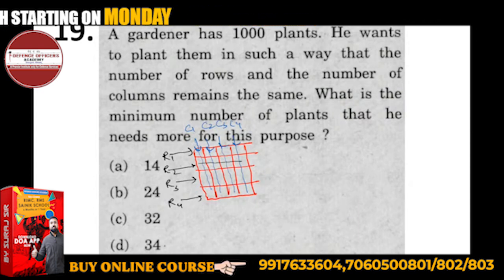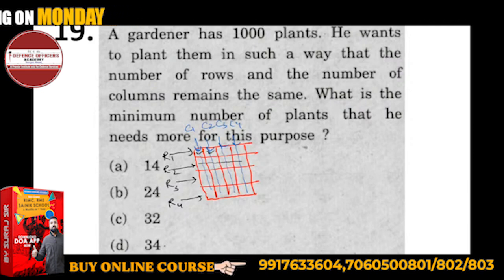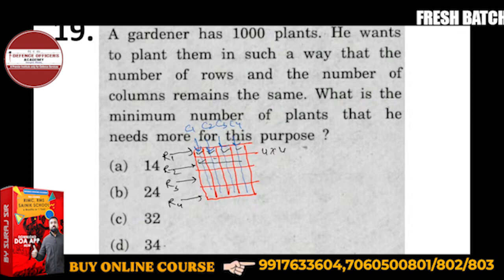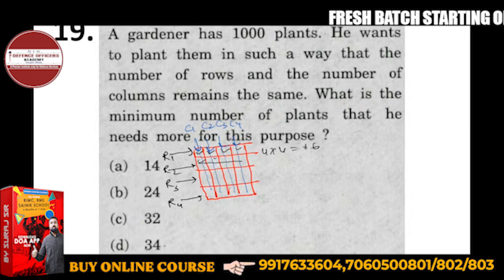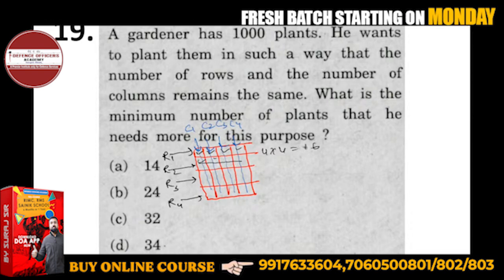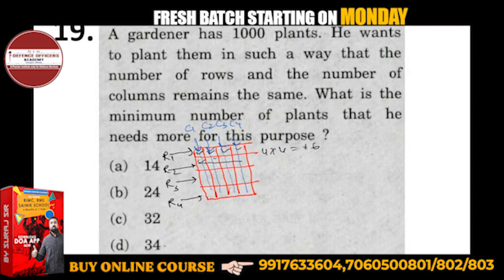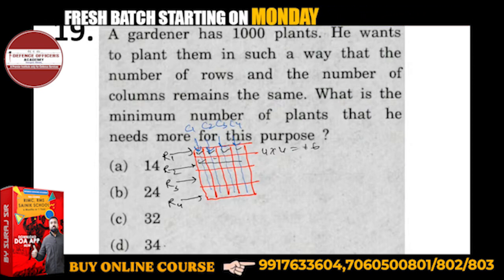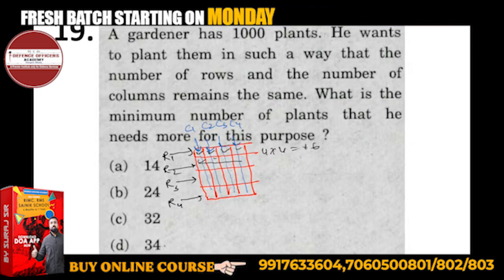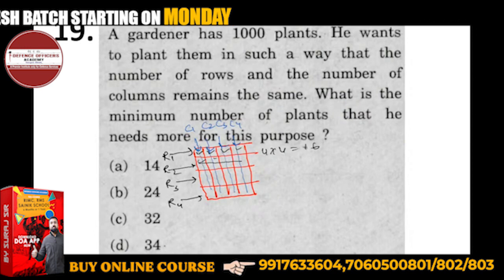If we count how many plants there are: 1, 2, 3, 4 — we can say rows into columns. Rows 4 and columns 4, so the answer is 16. So what do we have to do? We have to arrange 1000 plants such that the number of rows and columns are the same.